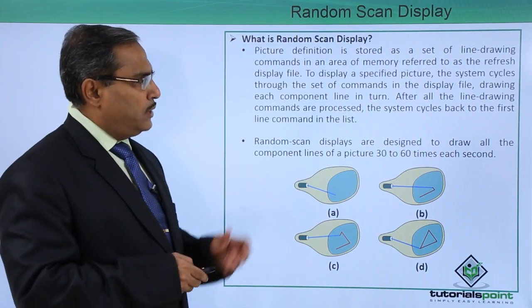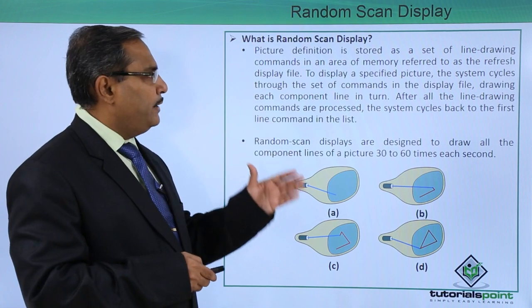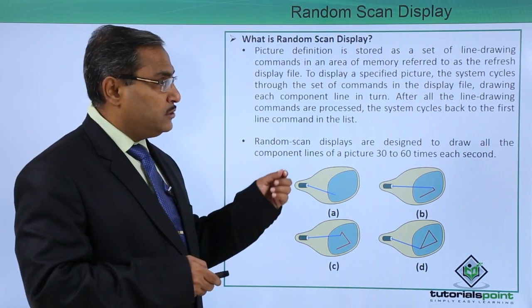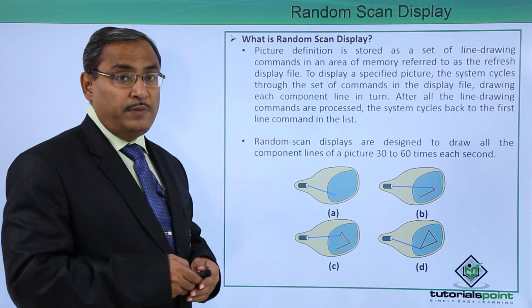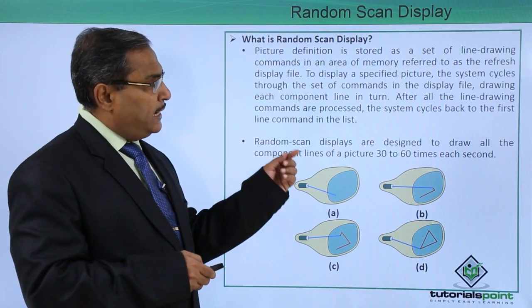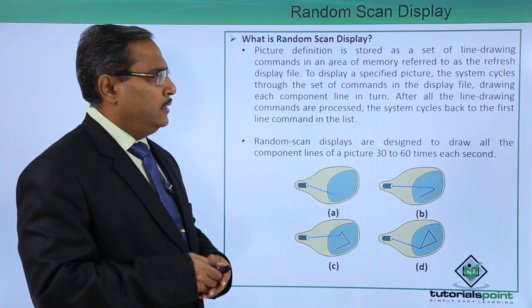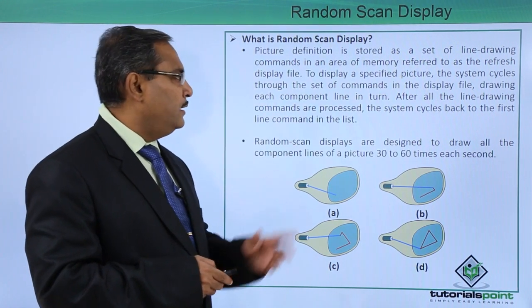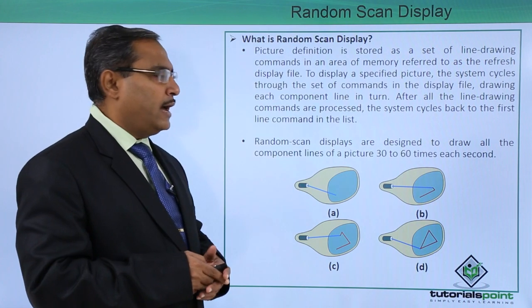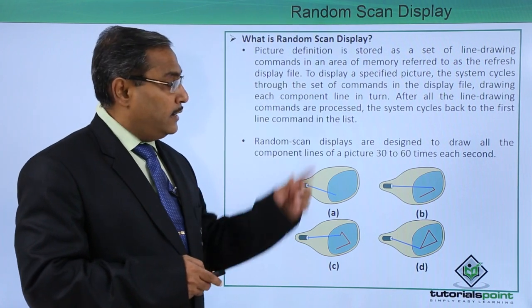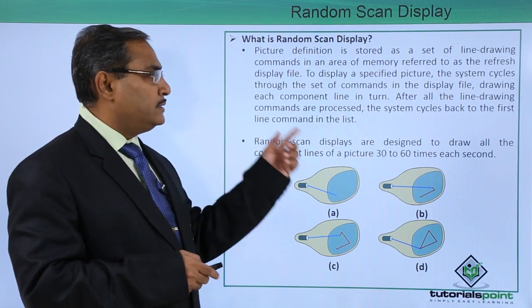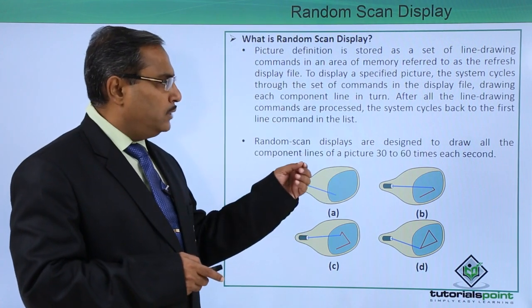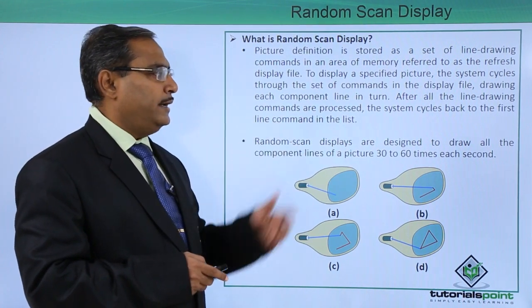Picture definition is stored as a set of line-drawing commands in an area of memory referred to as the refresh display file. To display a specified picture, the system cycles through the set of commands in the display file, drawing each component line in turn. After all the line-drawing commands are processed,